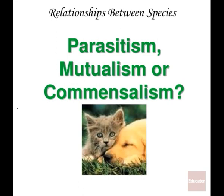Parasitism is certainly one form of relationship between species, but we have other kinds of relationships too — mutualism and commensalism. The next few slides, we're going to talk about the differences between those different types of relationships.